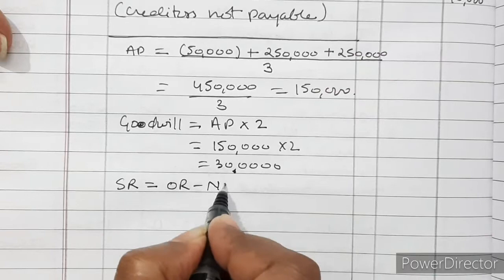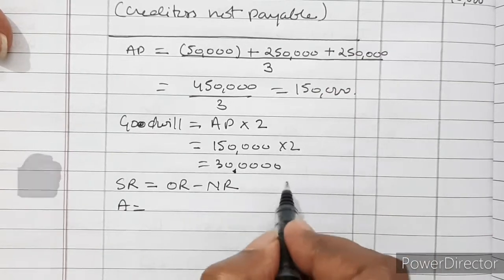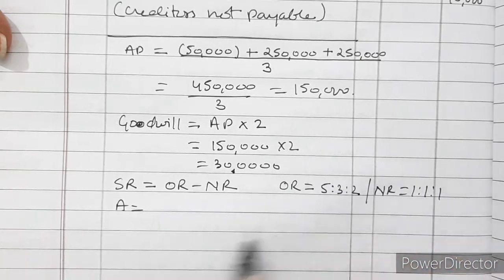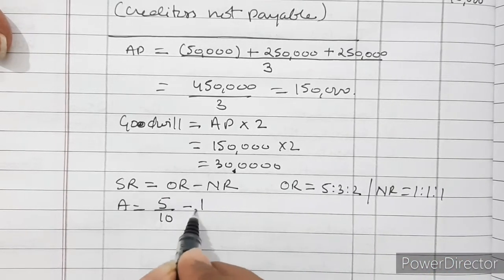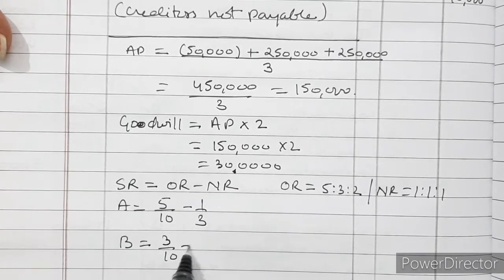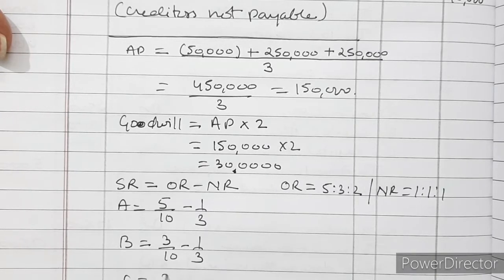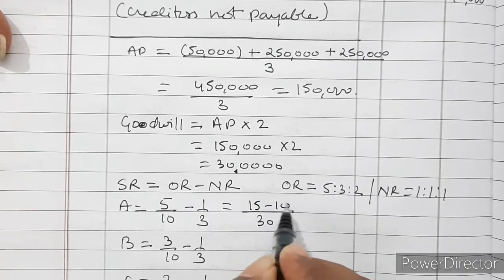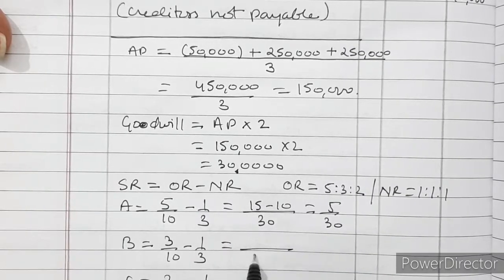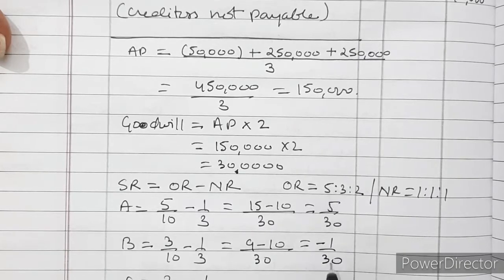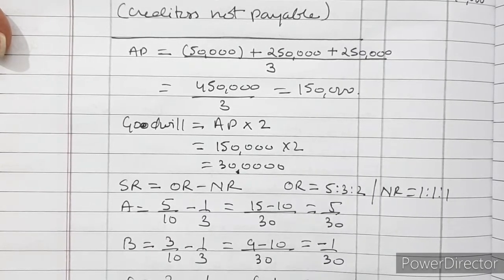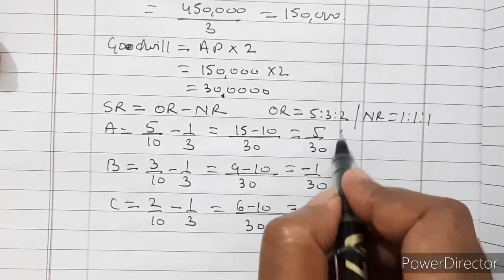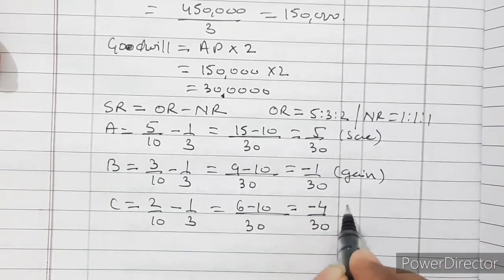For the treatment of goodwill, we calculate the sacrificing ratio = old ratio minus new ratio. Old ratio is 5:3:2 and new ratio is 1:1:1. For A: 5/10 − 1/3 = 15/30 − 10/30 = 5/30 (sacrifice). For B: 3/10 − 1/3 = 9/30 − 10/30 = −1/30 (gain). For C: 2/10 − 1/3 = 6/30 − 10/30 = −4/30 (gain). So A is sacrificing, B and C are gaining.